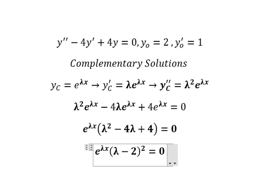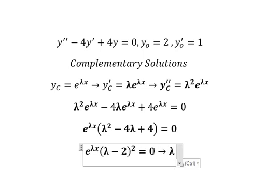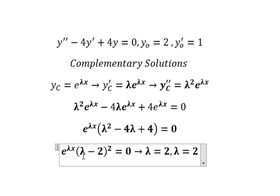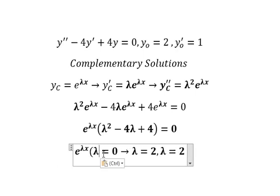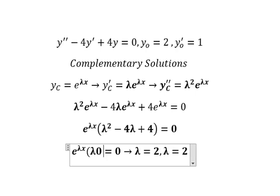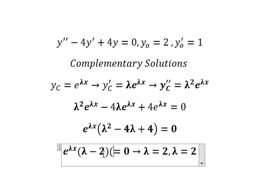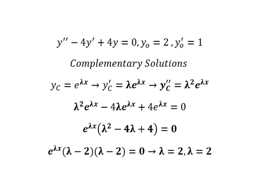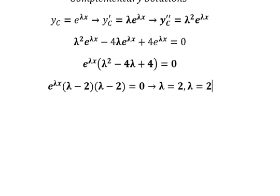After factoring, we have lambda minus two, everything to the power of two. That means we have two solutions: lambda equals two and lambda equals two again — because this is lambda minus two times lambda minus two. So in this situation we have the same repeated solutions.